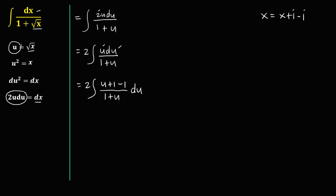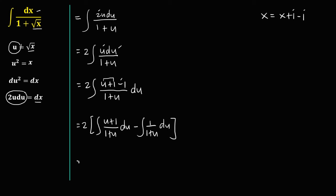We can now integrate this separately. So we have 2 times the integral of (u plus 1) over (1 plus u) du, minus the integral of 1 over (1 plus u) du. Simplifying, u plus 1 over 1 plus u equals 1, so we have 2 times the integral of 1 du, minus the integral of 1 over (1 plus u) du.